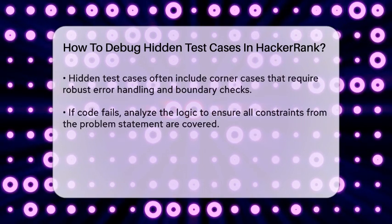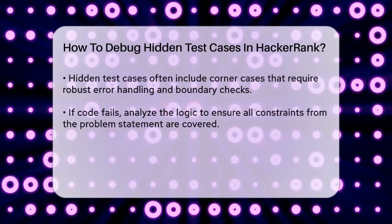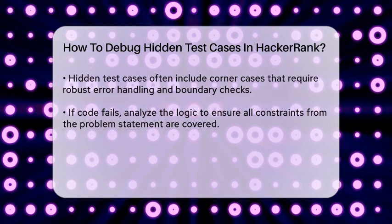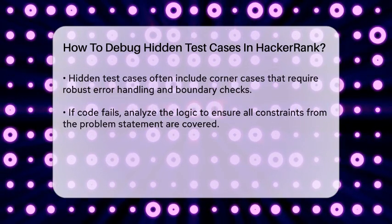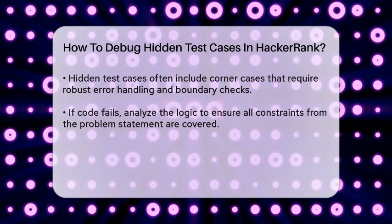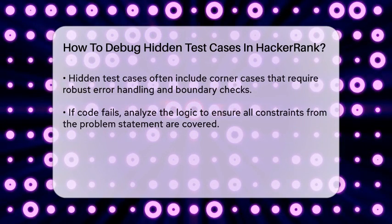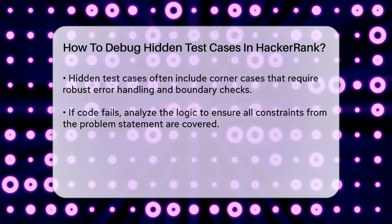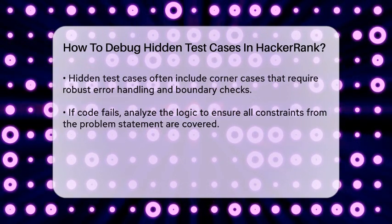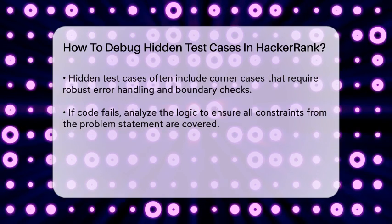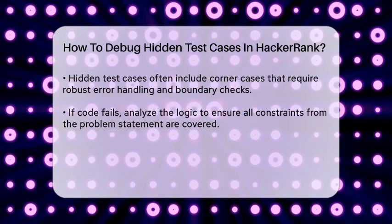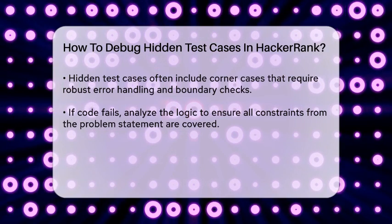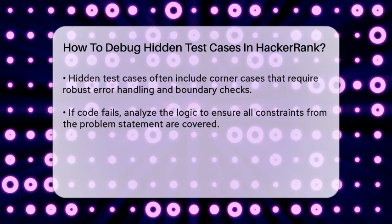Hidden test cases often include corner cases or different scenarios that your code must handle. Since you can't see the expected output for these tests, using print statements can help you figure out why your code is failing. For instance, if your code is failing a hidden test case, you might see an error message or an unexpected output that can give you a clue about what's going wrong.